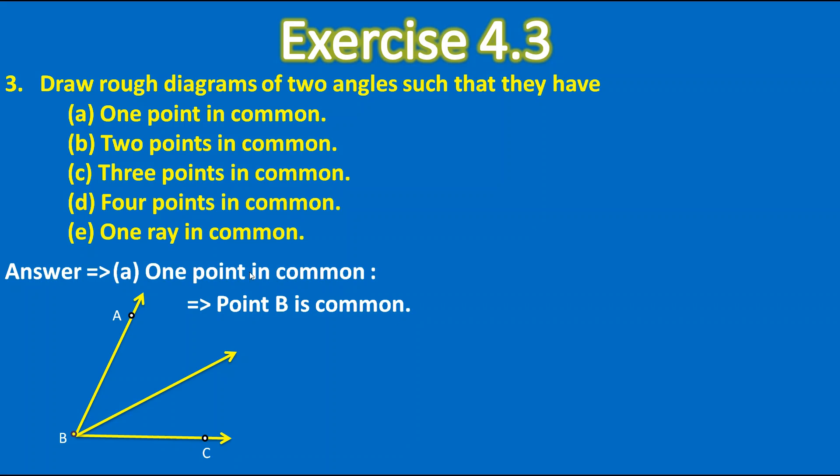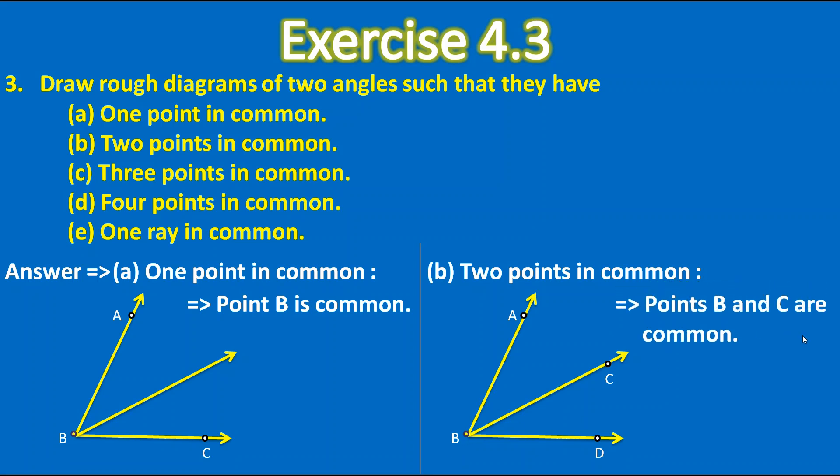Now the next one is two points in common. So here I drawn this diagram. See here. Here these are two angles and for both these angles the common points are B and C. So points B and C are common here.